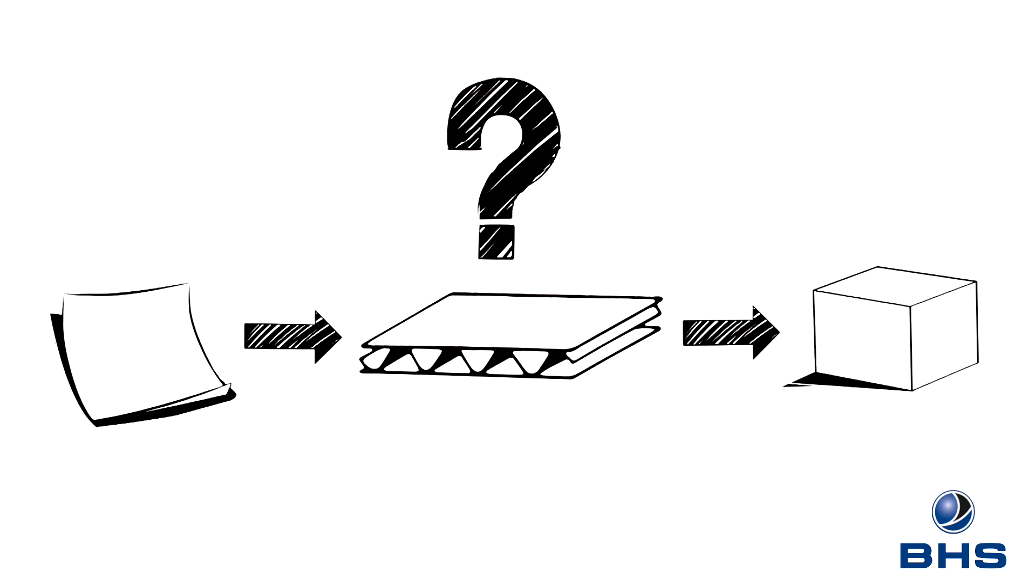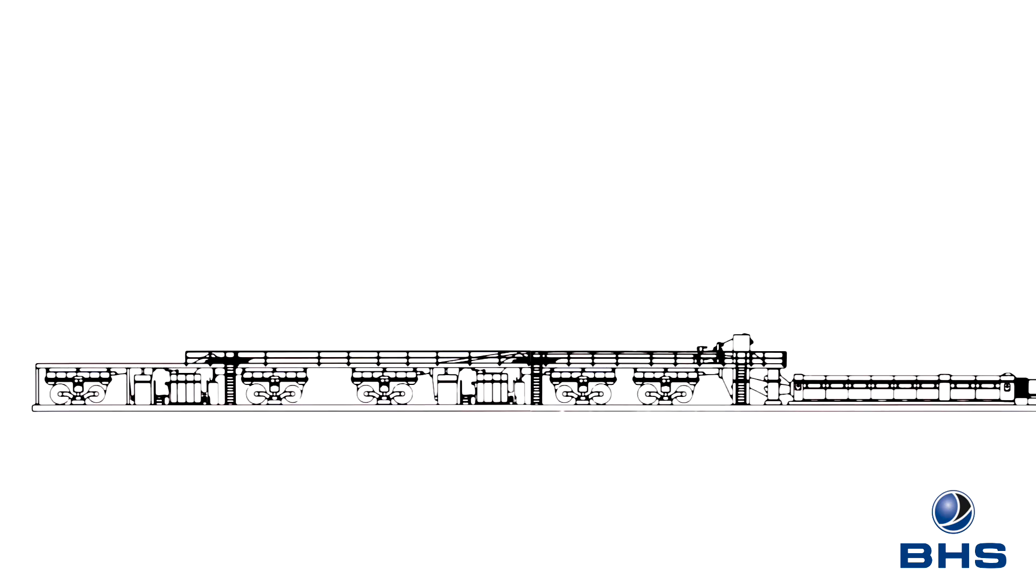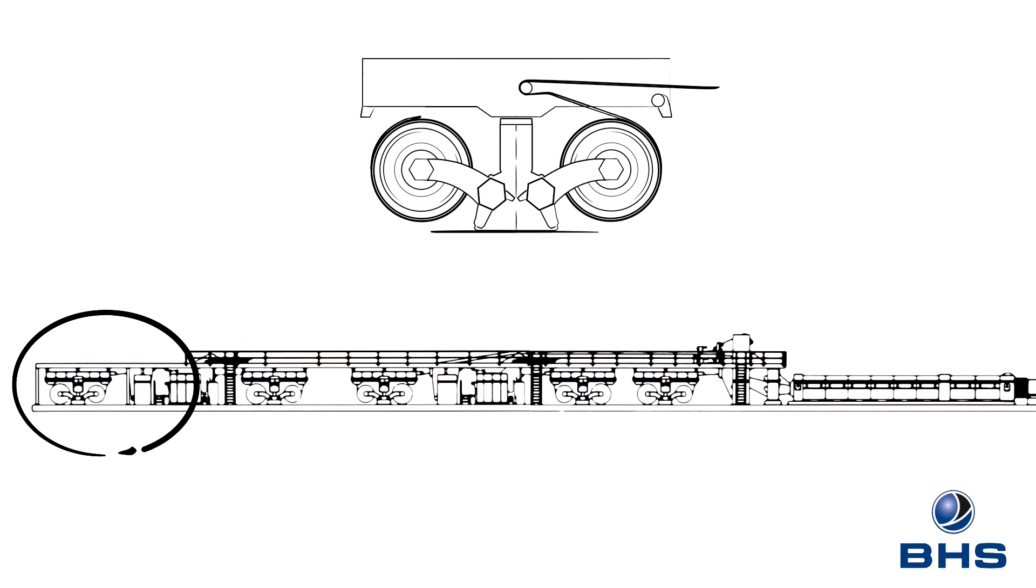So how does paper become a box? At first, the paper goes through what is called the wet end of the corrugator. Here, it is first fed through the individual machines of the reel stand and splicers, and then into the preheaters and preconditioners where it is heated.